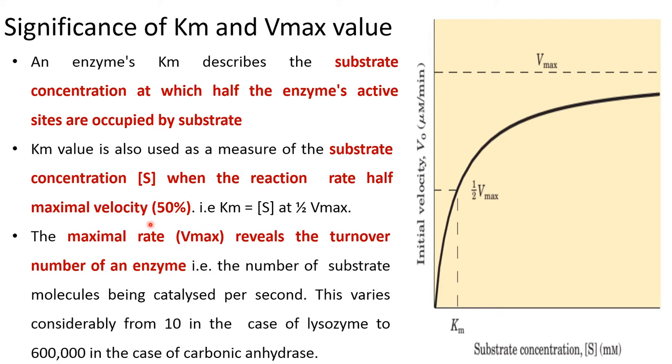The maximum rate reveals the turnover number of an enzyme, the number of substrate molecules being catalyzed per second. This varies considerably from 10 in case of lysozyme to 6 lakh in case of carbonic anhydrase.